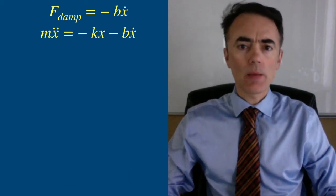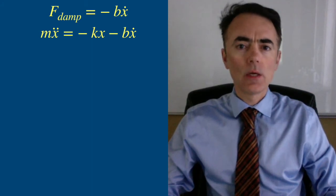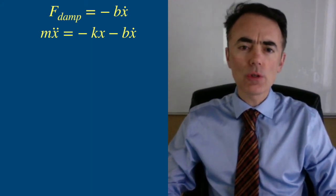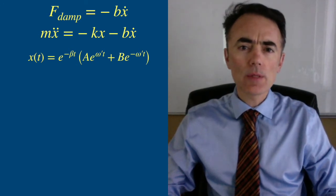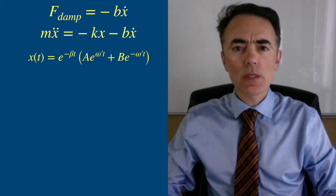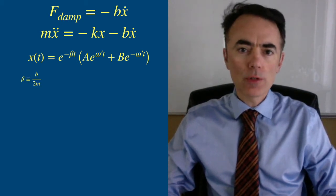Newton's second law wrote us mx two dots equal to minus kx minus bx dot. We found that the general solution to that was e to the minus beta times a times e to the omega prime t plus b times e to the negative omega prime t.